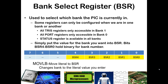The other register we really need to pay attention to is the bank select register. As we had already mentioned in a previous lecture, some special function registers are only available in certain banks. For example, the TRIS registers are in bank one, and the port registers are in bank zero. However, others are available across all of the banks — status is one of those 12 special function registers that you can access no matter which bank you are in.